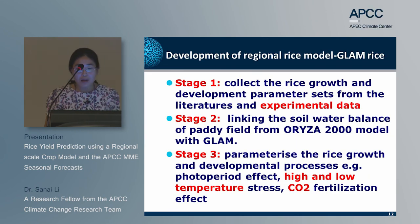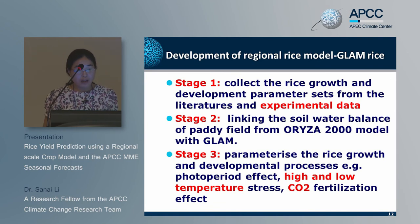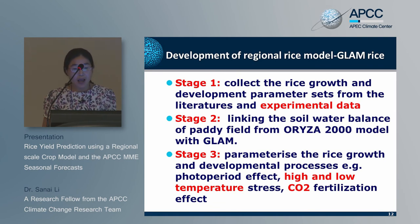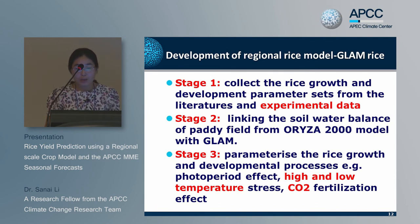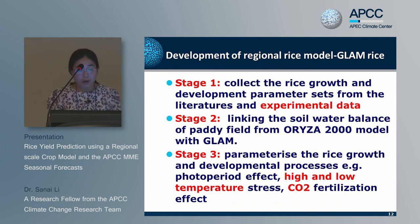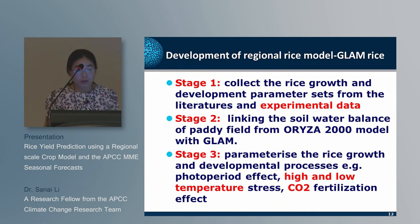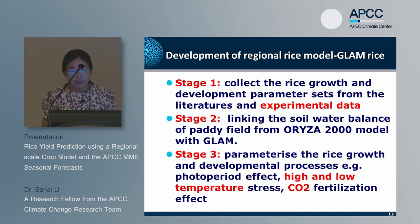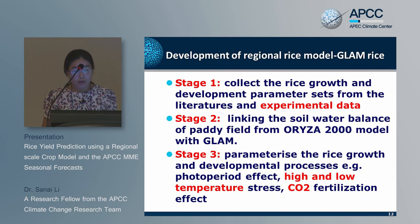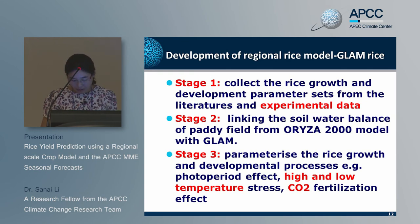Development of the regional rice model GLAM Rice includes three stages. Stage 1: collect rice growth and development parameter sets from literature and experimental data. Stage 2: link the water balance model for paddy fields with GLAM. Stage 3: characterize rice growth and development processes such as photoperiod effect, high/low temperature stress, and CO2 fertilization effect.